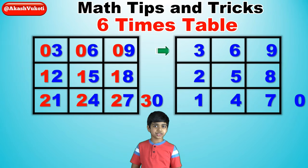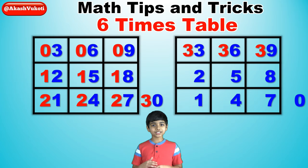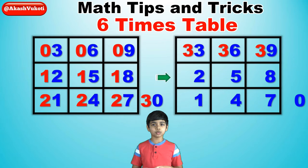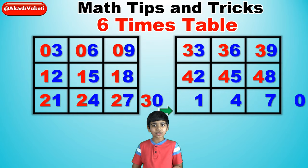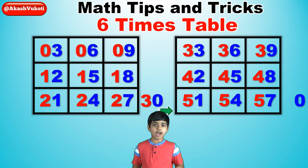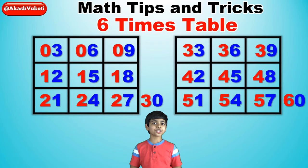Now repeat the same thing on the other side but with different numbers. For the tens digits in the top row of the second grid, we write three, three, three. For the tens digits in the middle row of the second grid, we write four, four, four. And for the tens digits in the bottom row of the second grid, we write five, five, five. Then write a six next to the second of the two zeros.